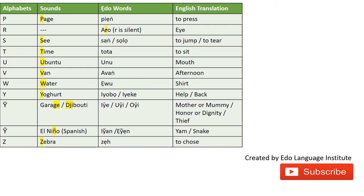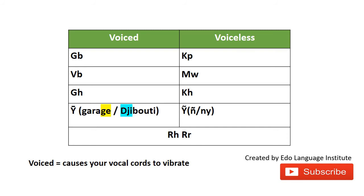'ZE' — to choose. We'll move on to the next slide. Now we're going to talk about the double consonants, but first I want to explain the differentiation between voiced and voiceless double consonants. 'Voiced' simply means when you pronounce the sound and your vocal cords vibrate.